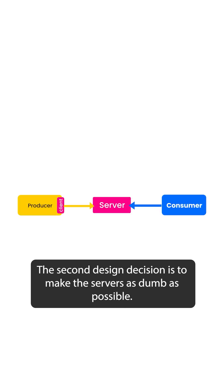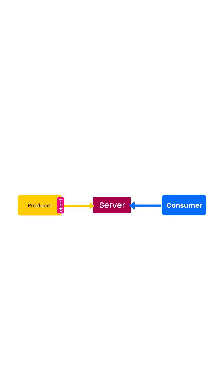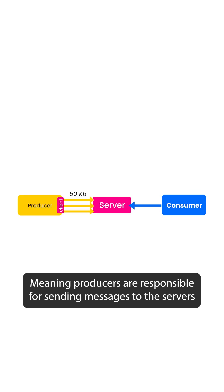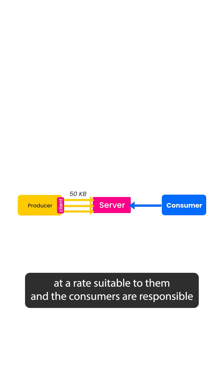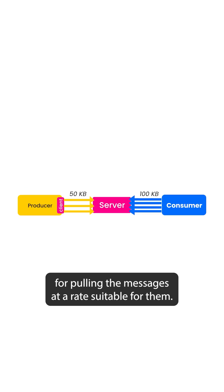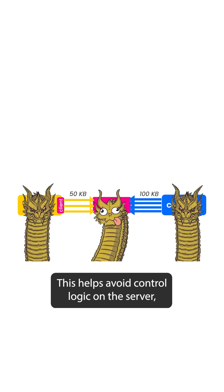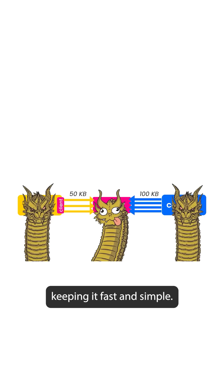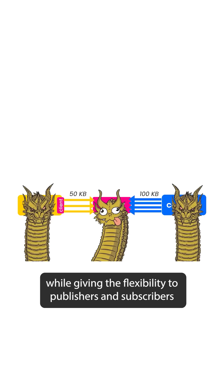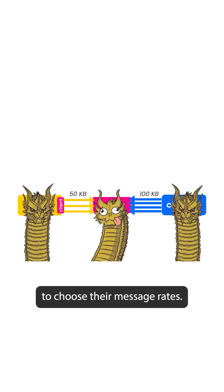The second design decision is to make the servers as dumb as possible, meaning producers are responsible for sending messages to these servers at a rate suitable to them, and the consumers are responsible for pulling the messages at a rate suitable for them. This helps avoid control logic on the server, keeping it fast and simple, while giving the flexibility to publishers and subscribers to choose their message rates.